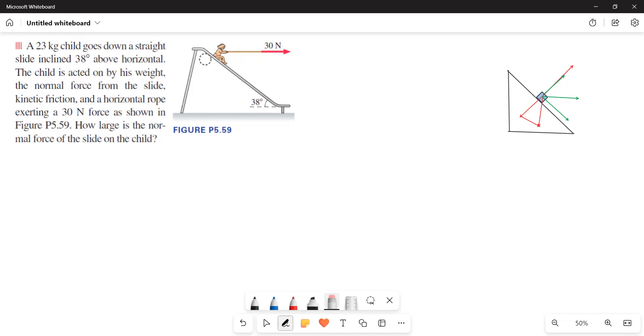Here the child is acted upon by many forces. One of the forces is weight, another force is the force exerted by the rope, another one is the kinetic friction, and the normal force. Now he is asking us to find out only the normal force.